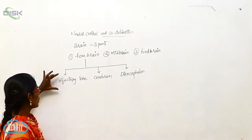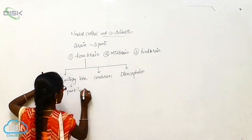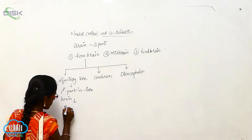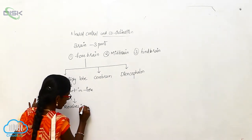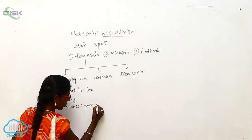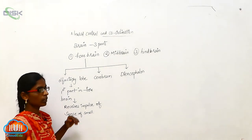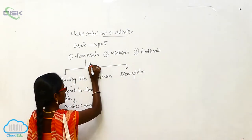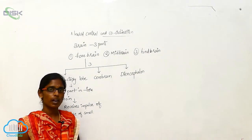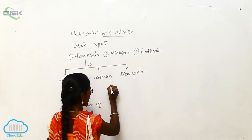The olfactory lobe is the first part of the forebrain. It receives impulses from the sense of smell. The forebrain has three parts: the olfactory lobe, cerebrum, and diencephalon. The olfactory lobe receives impulses of the sense of smell.